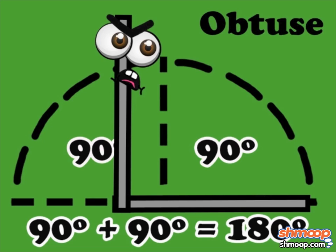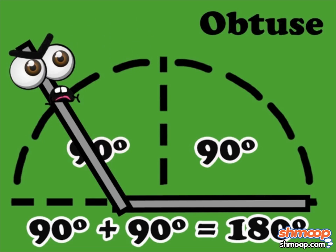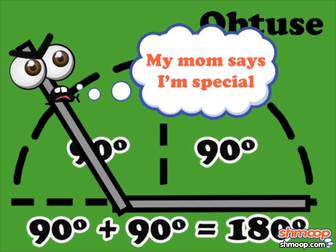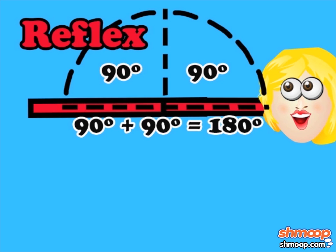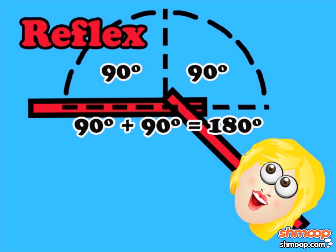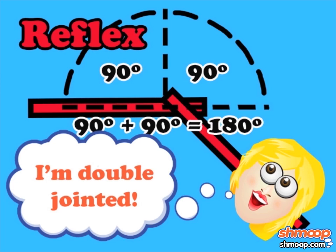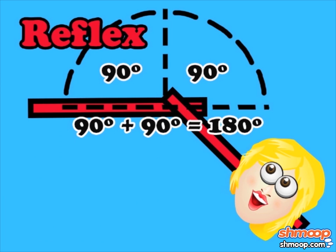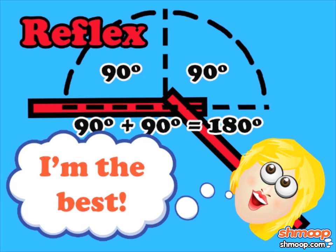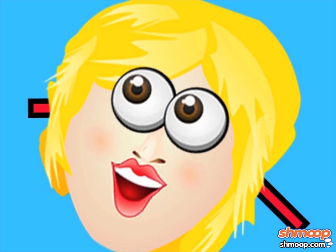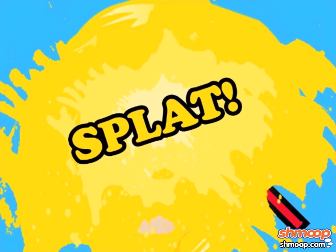An obtuse angle is an angle that is between 90 and 180 degrees. A reflex angle is an angle greater than 180 degrees, which makes it the greatest of all angles — not that it needs a bigger head.